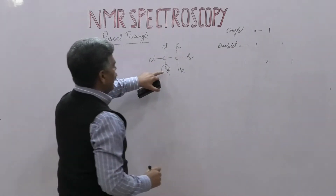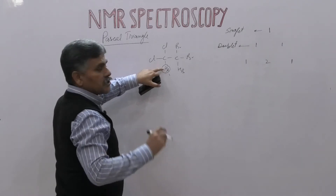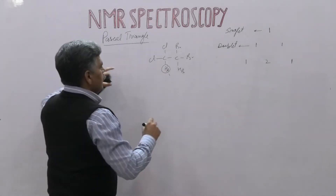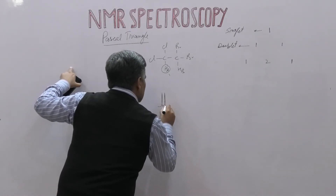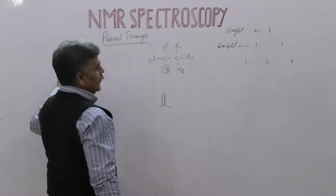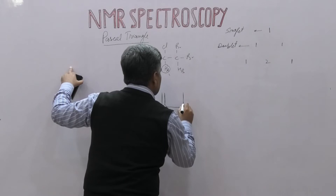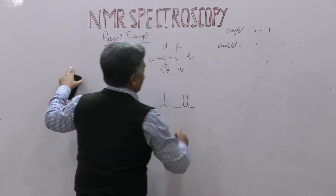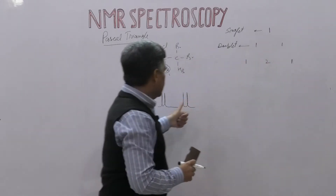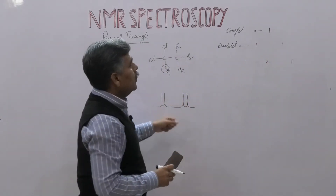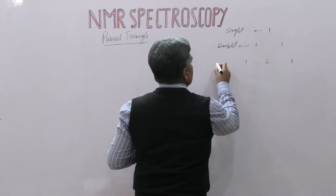Suppose we have HA: the signal for HA is separated into two lines — a doublet — and the intensity of these two lines is almost the same. The same is the case for HB, which again gives a doublet with equal intensity for both lines. So for a doublet, the intensity ratio is 1:1.